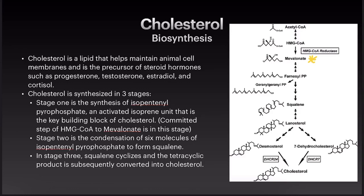Cholesterol is synthesized in three stages. Stage one is the synthesis of isopentanyl pyrophosphate, an activated isoprene unit that is the key building block of cholesterol. The committed step of the biosynthesis of cholesterol is where HMG-CoA is converted to mevalonate by HMG-CoA reductase. Then ATP is used to convert the mevalonate into isopentanyl pyrophosphate, which is the building block of cholesterol.